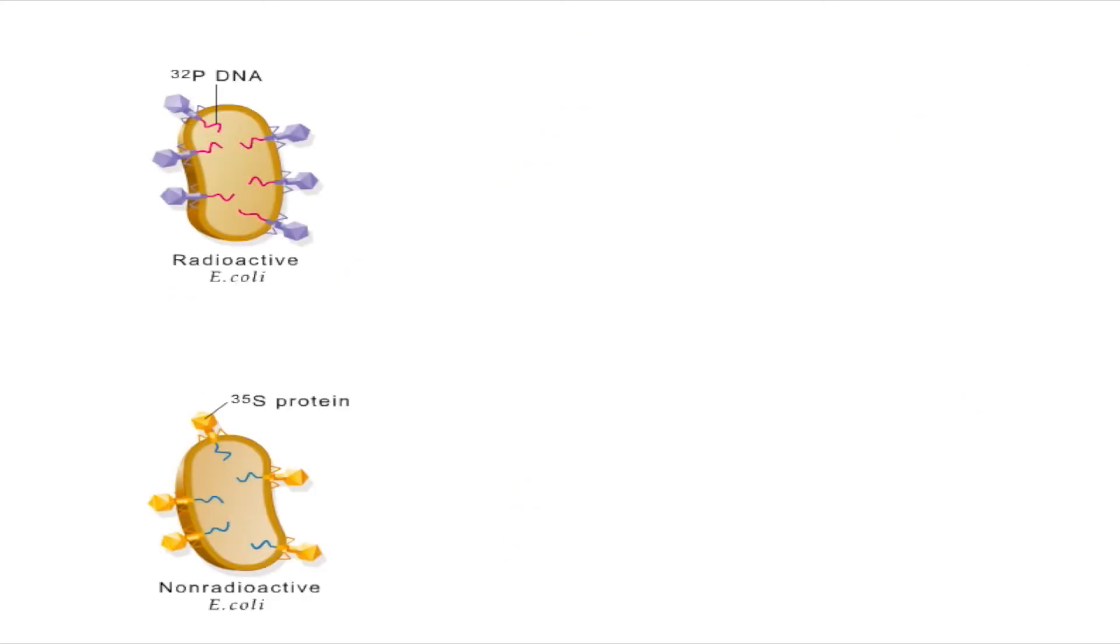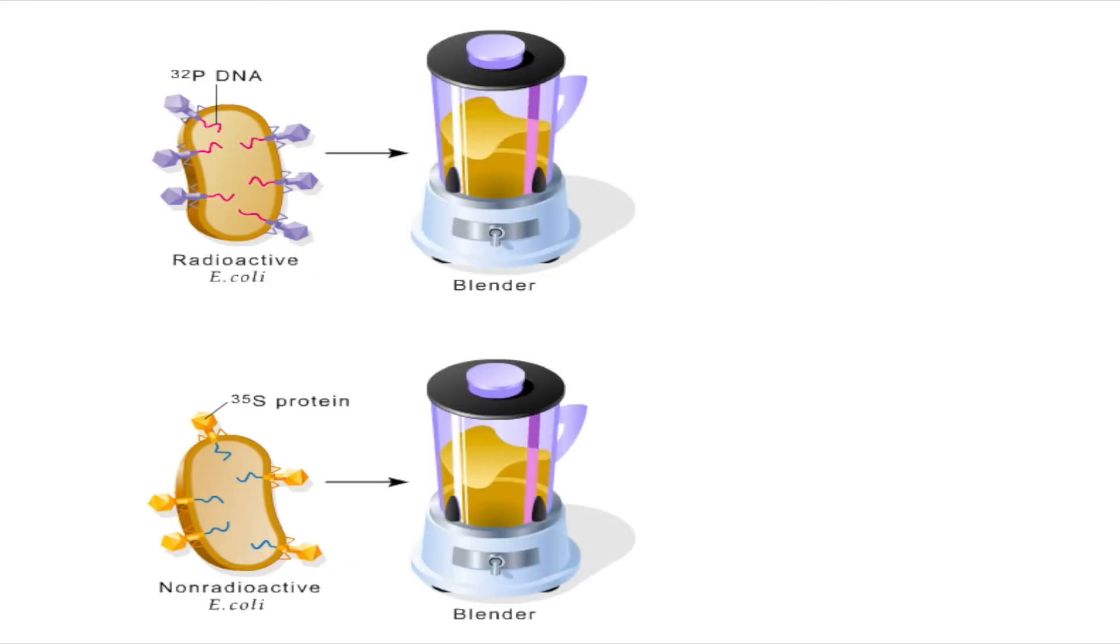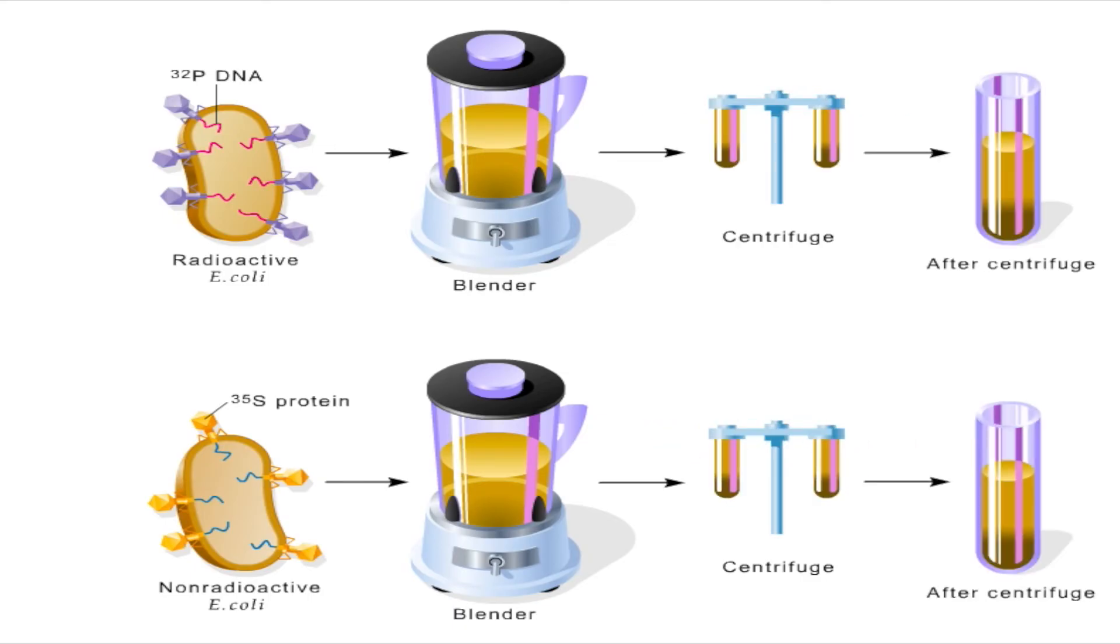In the next phase of their experiment, Hershey and Chase infected E. coli with the two types of labeled T2. They then used a blender and a centrifuge to separate the protein parts of the phage, called the phage ghosts, from the rest of the infected cell.